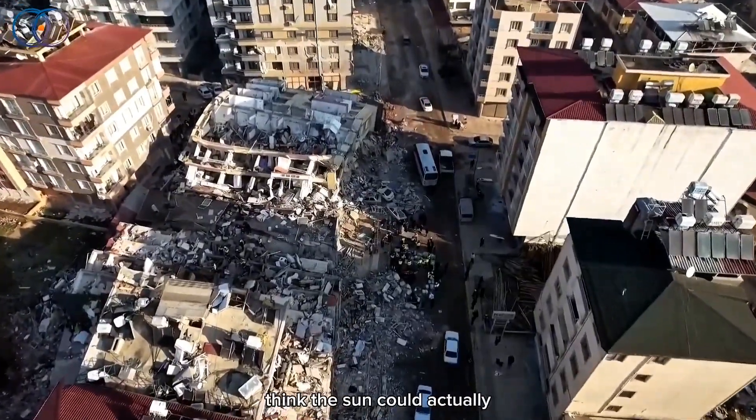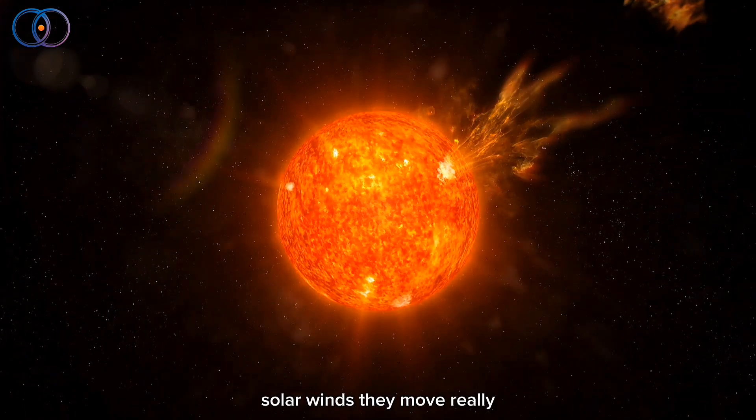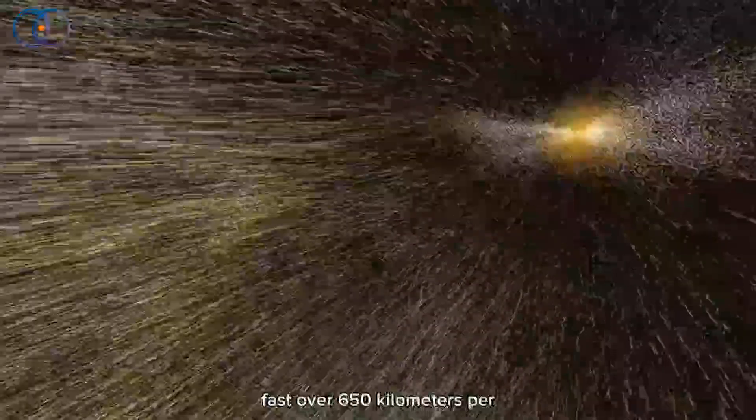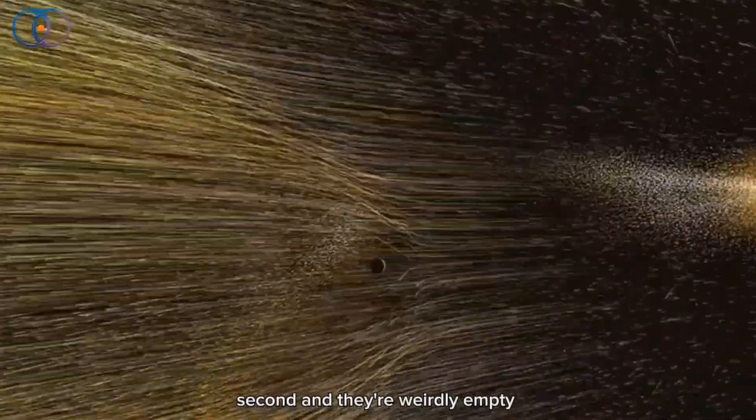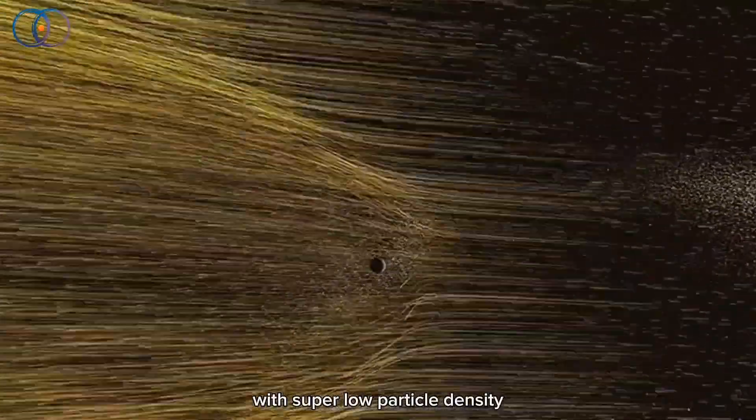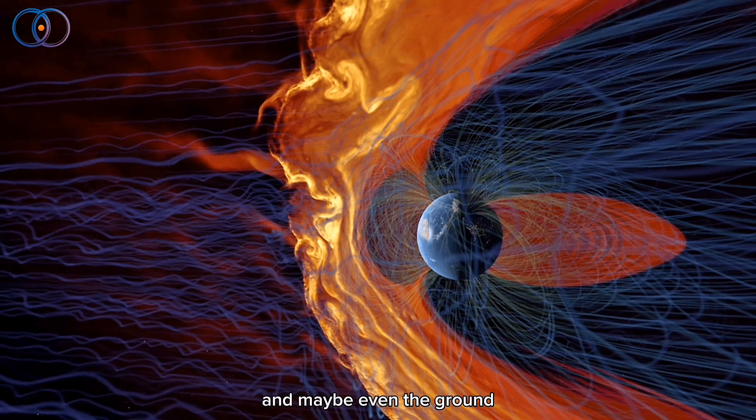So why do scientists think the sun could actually help trigger earthquakes? It comes down to those high-speed solar winds. They move really fast, over 650 kilometers per second, and they're weirdly empty, with super low particle density. When this hits Earth, it messes with our magnetic field, and maybe even the ground itself.